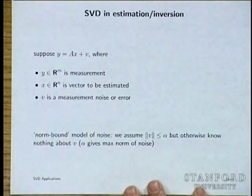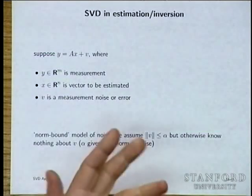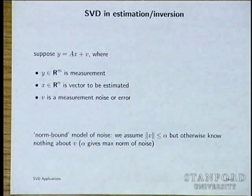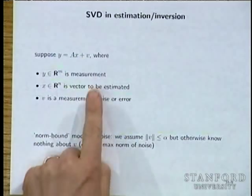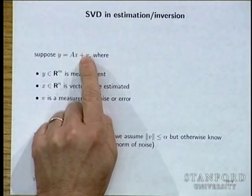Another model is the norm-bound model: you know nothing about the noise except you have a bound on its norm. This is more forgiving than a statistical model. In a statistical model, V is random — not out to get you. In the norm-bound model, V can include someone intentionally jamming your measurement, quantization error, or anything adversarial.